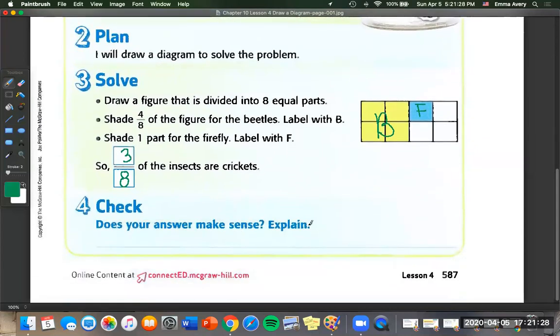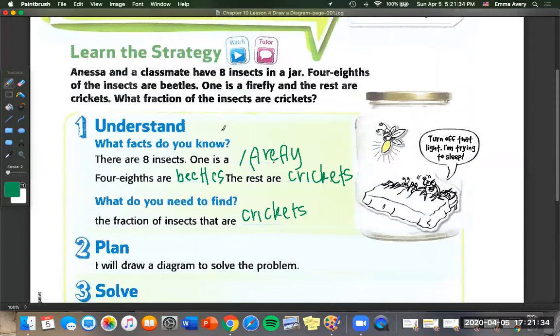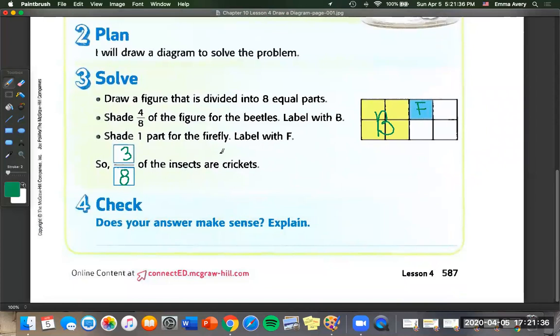And let's check our answer. Does it make sense? So if we know from this top part that there are eight insects in the jar, so if we take eight minus the four we know that are beetles minus the one that's fireflies, we get three crickets.